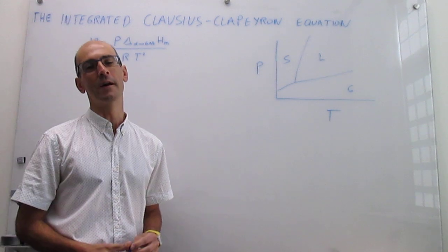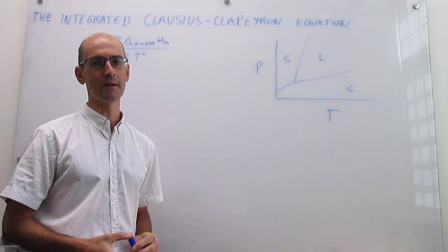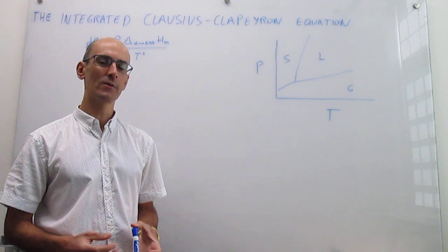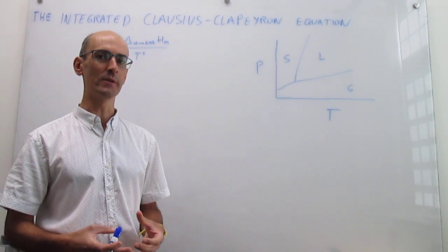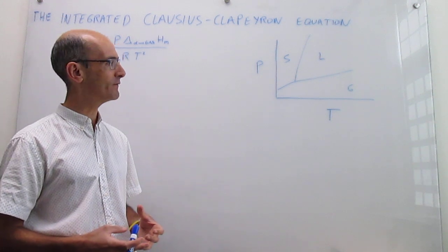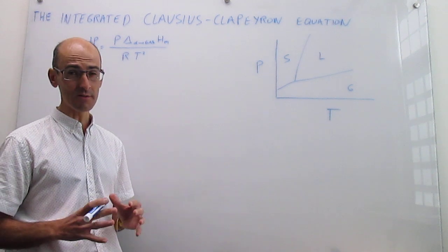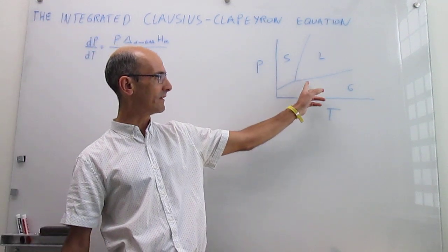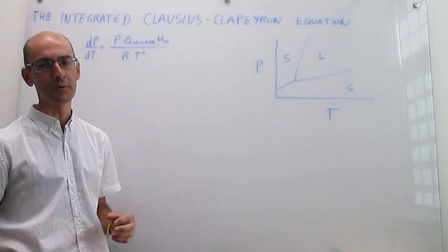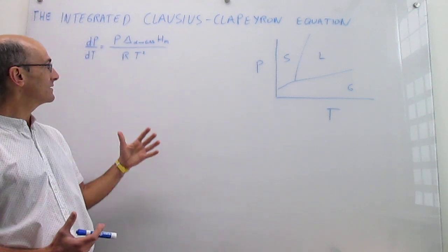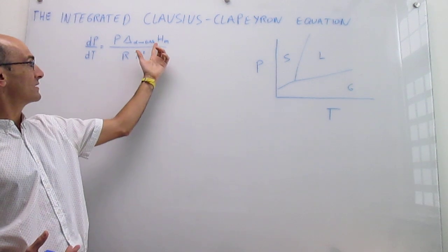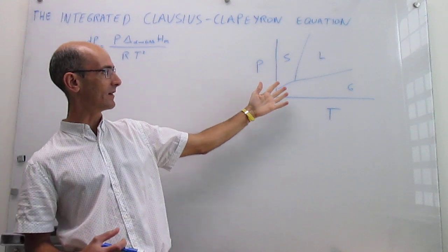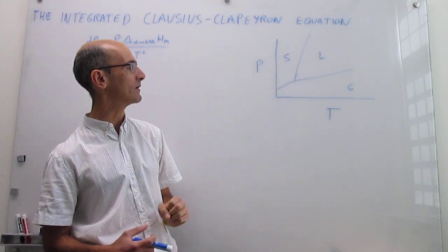In this video we close our discussion of quantitative aspects of phase diagrams by deriving the integrated Clausius-Clapeyron equations. The Clausius-Clapeyron equations allow you to predict the slope of phase boundaries in a phase diagram. For the Clausius-Clapeyron equation you always have to look at the final phase of the transition being a gas — so we're looking at the liquid-to-gas and solid-to-gas phase boundaries. You simply need to know the enthalpy of the phase transition, and the pressure and temperature are given by whatever points you want to calculate that slope at.